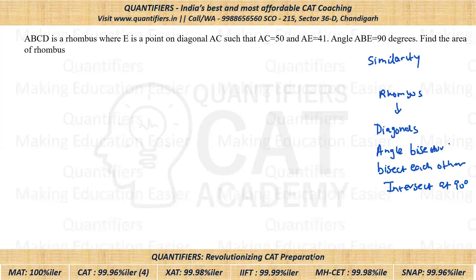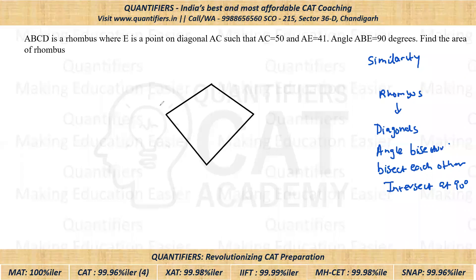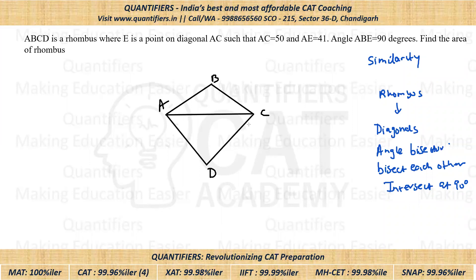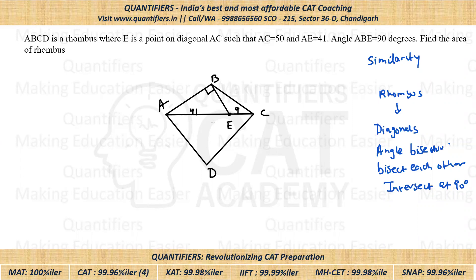These are the properties required to solve this question. Now let us draw the figure. So let's say this is rhombus ABCD. Further, it is given that E is a point on diagonal AC, so let us draw diagonal AC such that AC = 50 and AE = 41. So E is a point such that AE = 41 and the full diagonal is 50, so EC must be 9. Angle ABE is 90 degrees, so let us join B and E — this complete angle is 90 degrees.